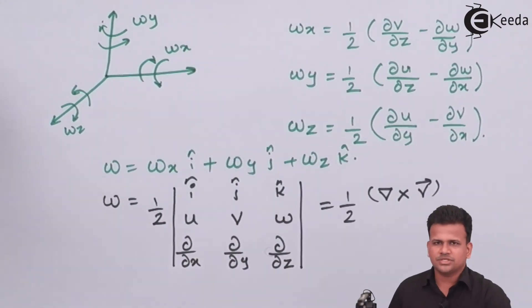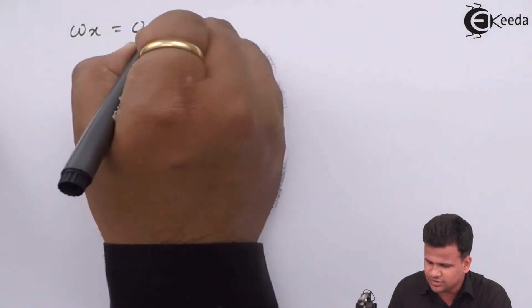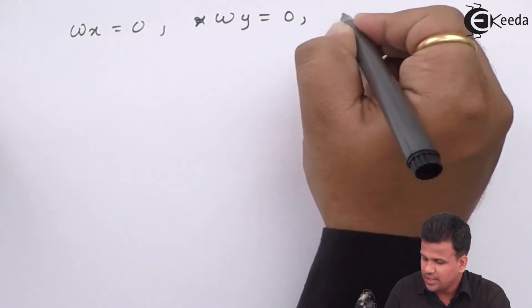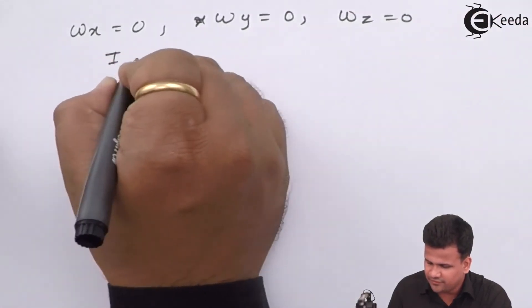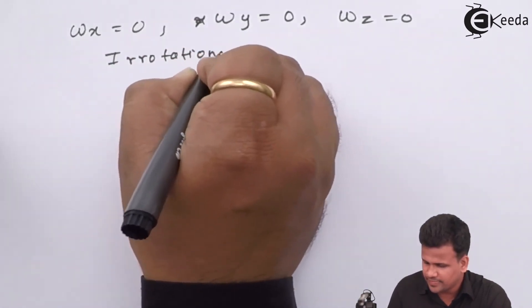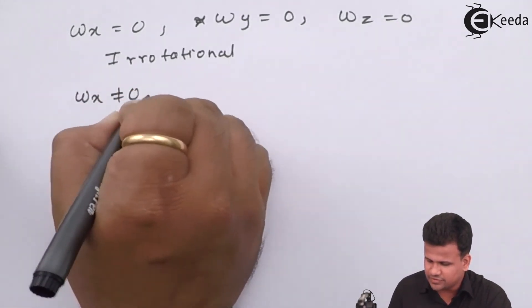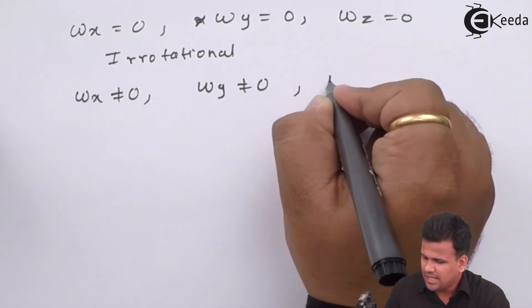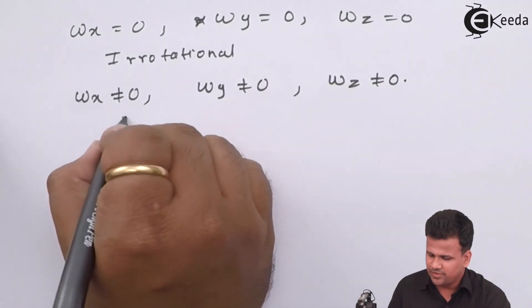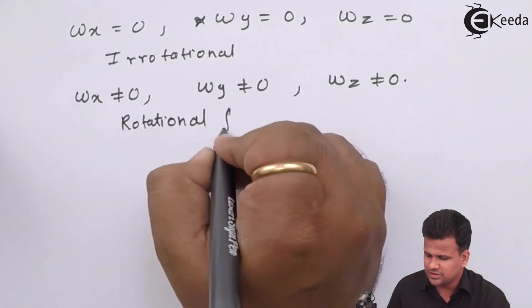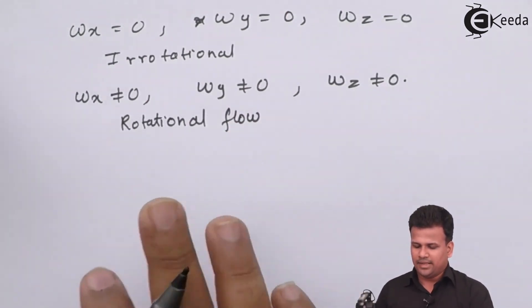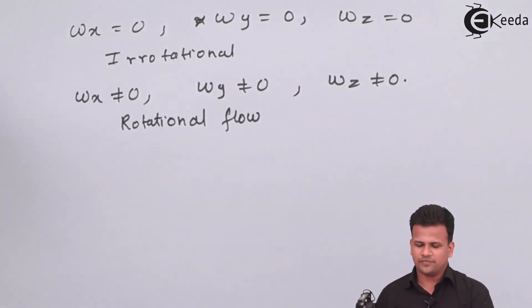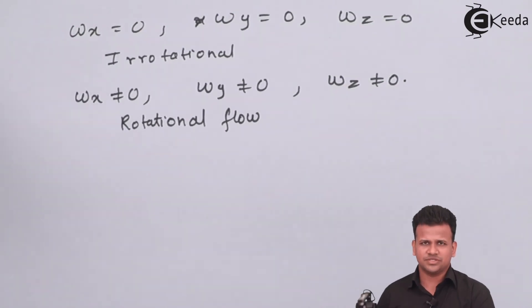For an irrotational flow, all angular velocity components are zero: omega_x = 0, omega_y = 0, and omega_z = 0. For rotational flow, omega_x ≠ 0, omega_y ≠ 0, and omega_z ≠ 0. So a fluid may flow as either irrotational or rotational, and we now have the individual equations to distinguish them. I hope you have understood rotational flow, irrotational flow, and the mathematical model to derive each. Thank you.